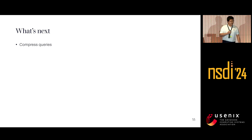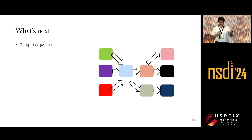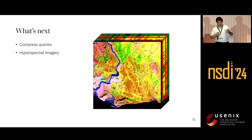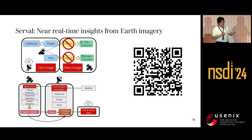Finally, I'd like to point out some challenges still waiting to be addressed. With many applications submitted to Servo, there are many redundancies — for example, the cloud filter is shared across many applications. Can we share information and compress the compute graph to reduce the load? Additionally, satellites can now take hyperspectral imagery, which is much bigger and heavier to compute on — what can be done to ensure real-time delivery given all the constraints? Our code is available by scanning the QR code here. With that, I'm happy to take questions.